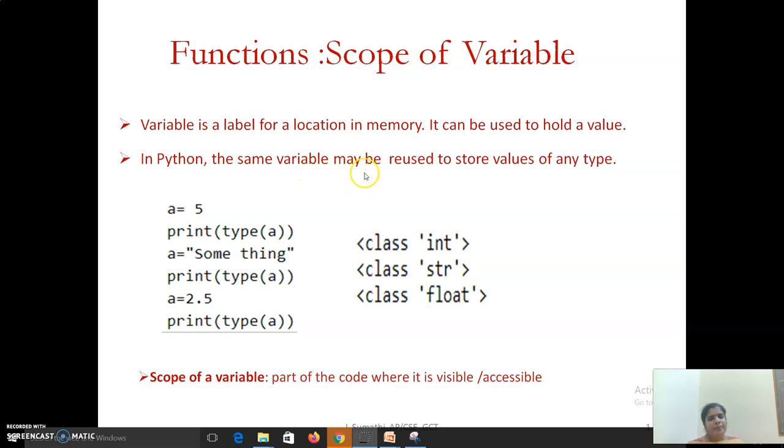In Python, the same variable may be reused to store values of any type. Here is an example where initially a holds the value 5, so the data type of variable a is integer. Later, a holds the value 'something'. Now when you print its data type, it will show as string. When you change the value of variable a to 2.5, the data type will be changed to float.